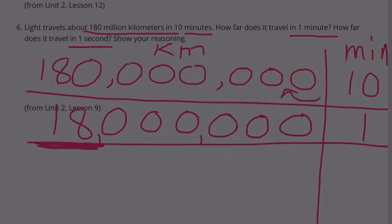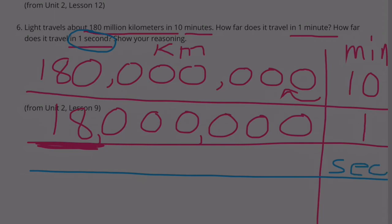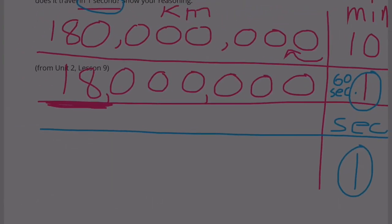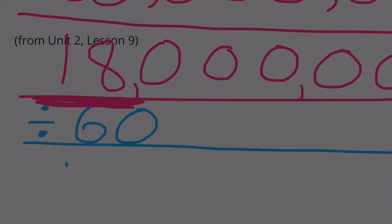Next it says, how far does it travel in one second? Well, we know that one minute is 60 seconds. So since one minute is 60 seconds, we can now think of this as 60 seconds, and 60 divided by 60 equals one. So we need to divide 18 million by 60.